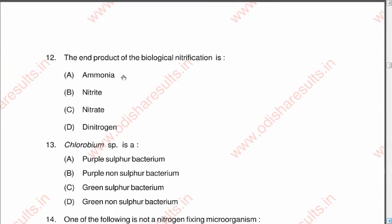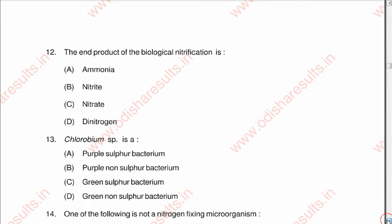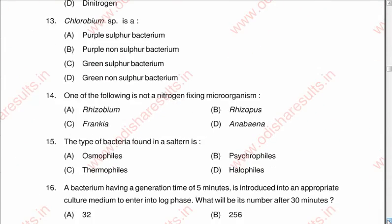Question twelve: The end product of biological nitrification is A: ammonia, B: nitrite, C: nitrate, D: dinitrogen. The correct answer is C: nitrate.